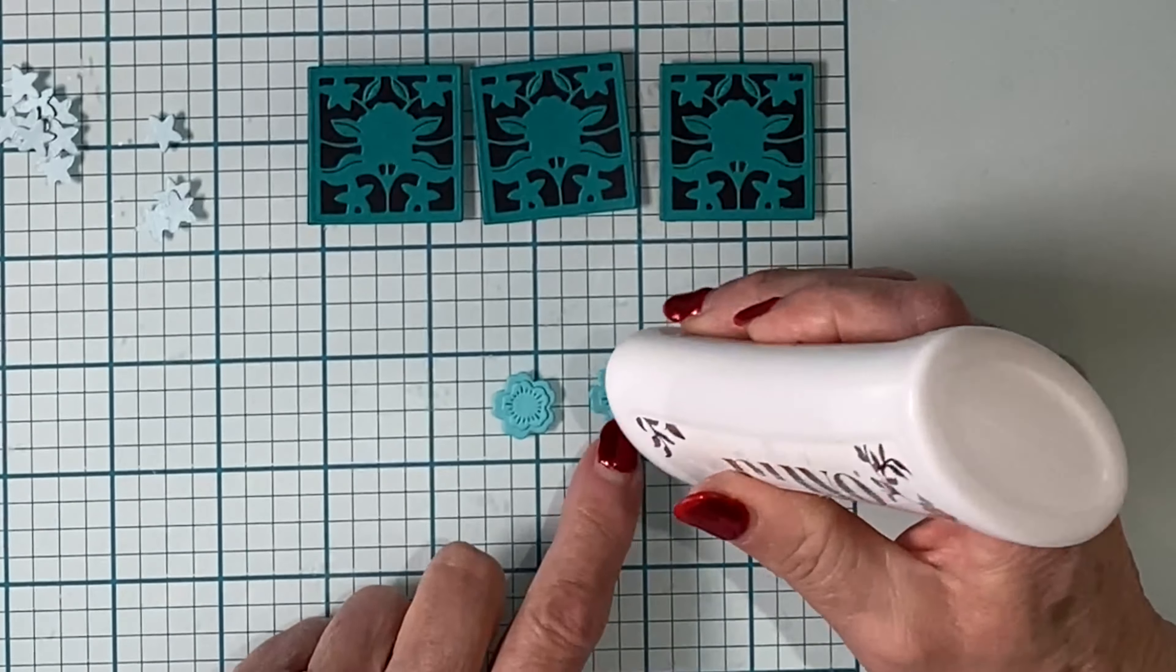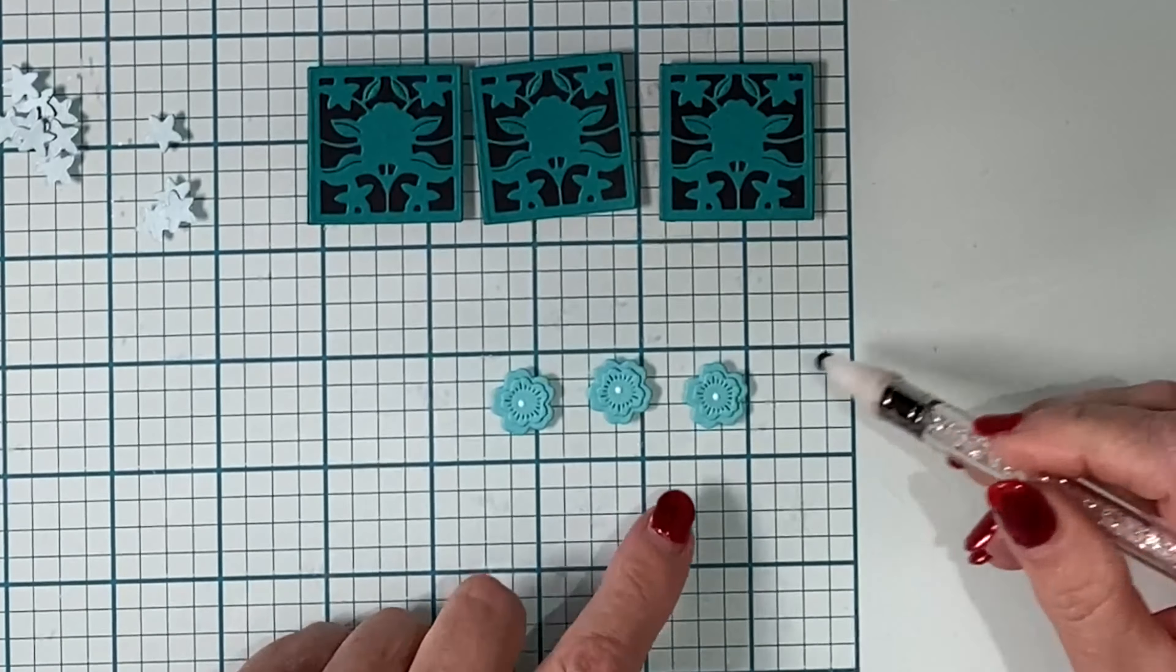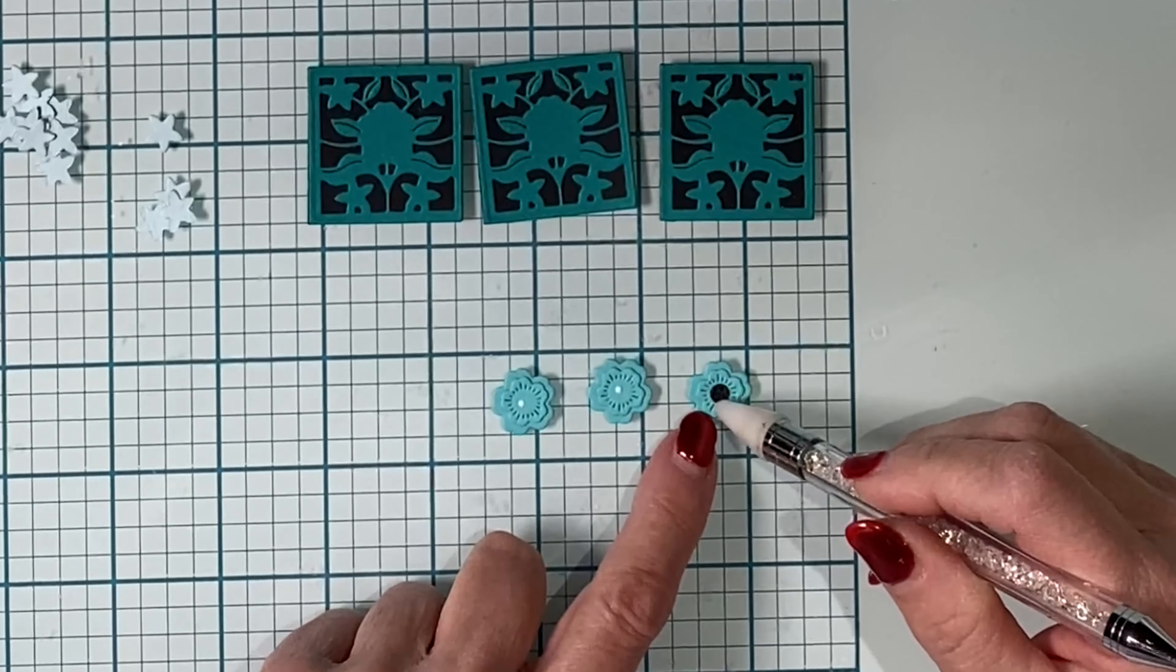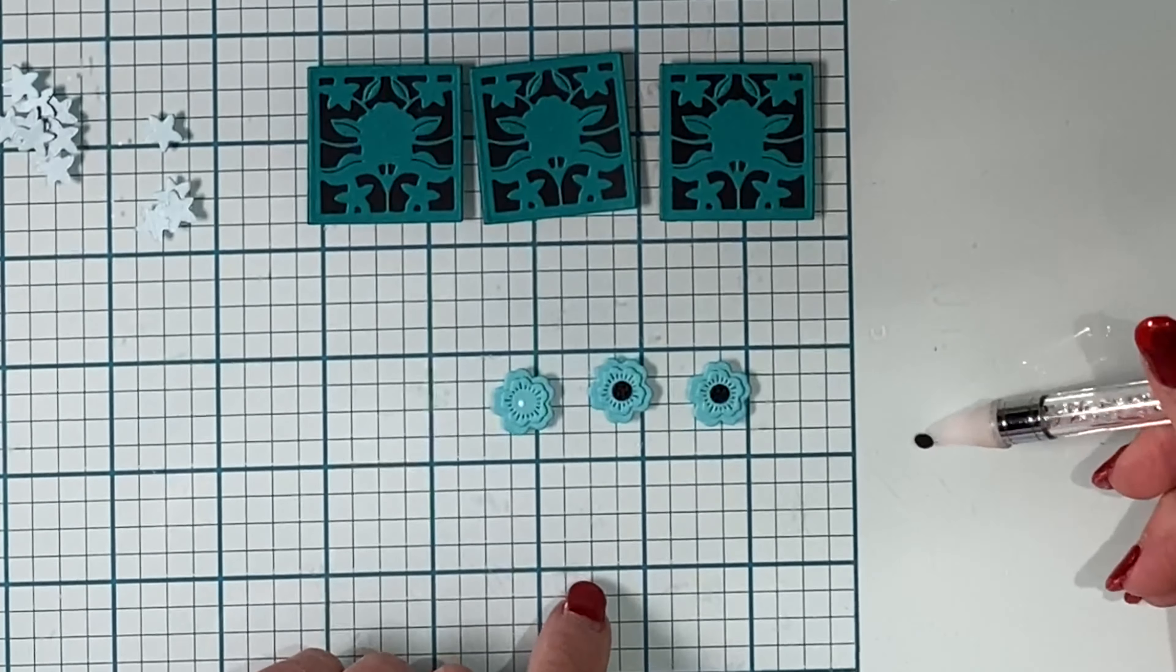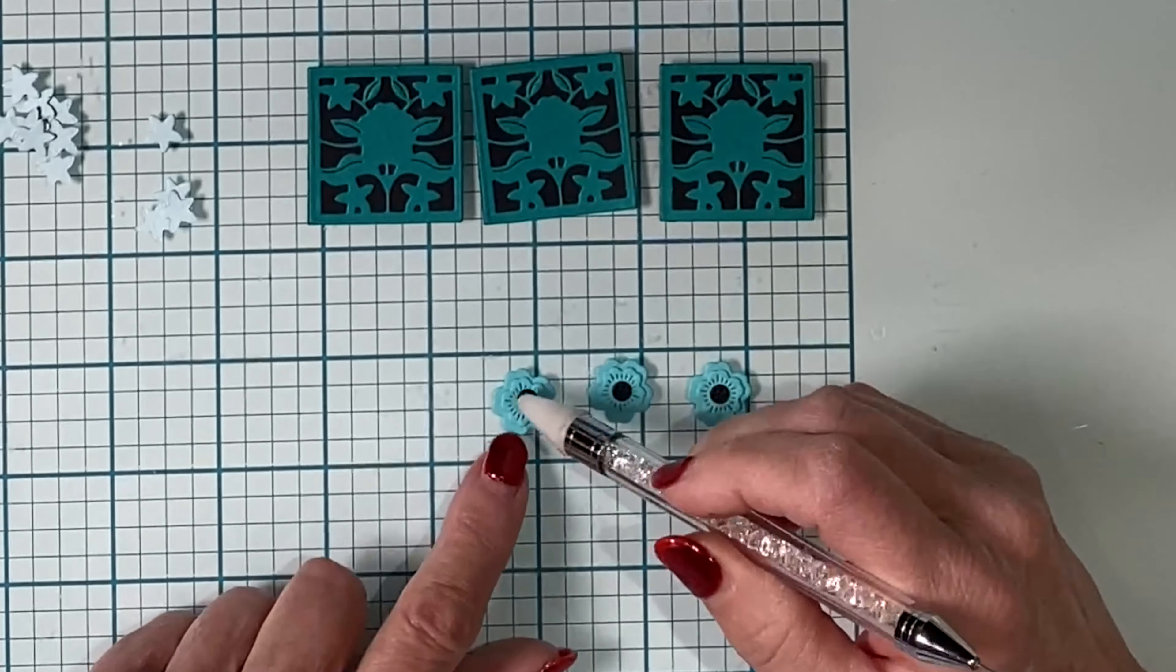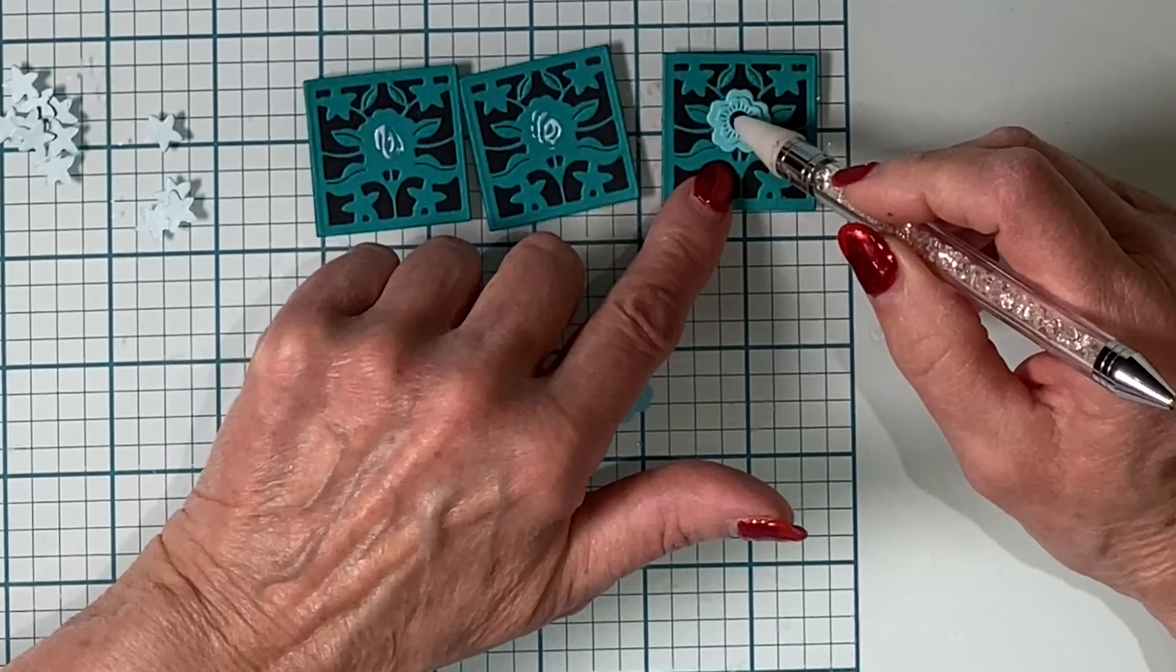These flowers are finished off with some simple black die cut centers. There is one die that cuts the flower centers for all five flowers found on each tile, and then these pretty flowers are adhered to the tile.